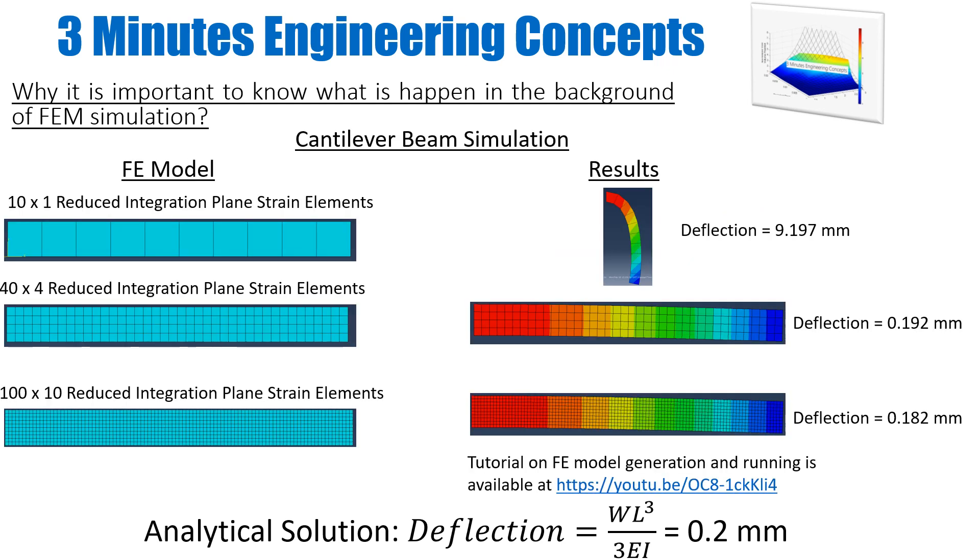I take my model into FE software like Abaqus. I construct my FE model using reduced integration plane strain elements. Reduced integration is a type of formulation. I model it with three different types of mesh: one is 10 by 1 mesh which you see in the top left diagram, the second one is 40 by 4 elements, and the third one is even more fine mesh with 100 by 10 elements. They are all reduced integration elements.